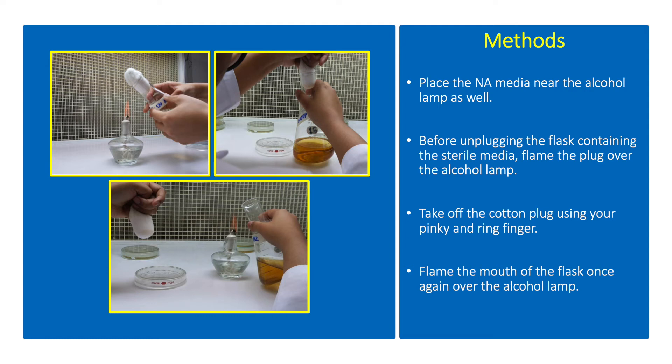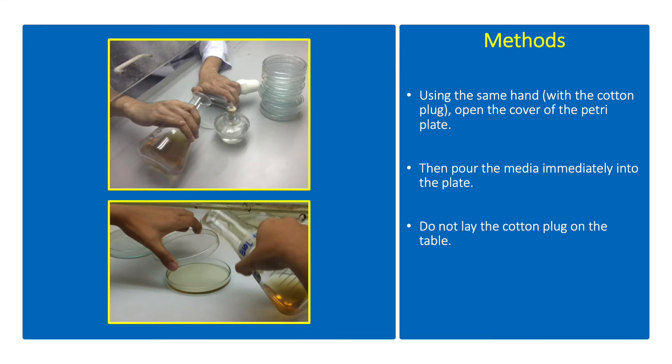Before unplugging the flask containing the sterile media, flame the plug over the alcohol lamp. Take off the cotton plug using your pinky and ring finger. Then flame the mouth of the flask once again over the alcohol lamp. Using the same hand with the cotton plug, open the cover of the petri plate. Then pour the media immediately into the plate.